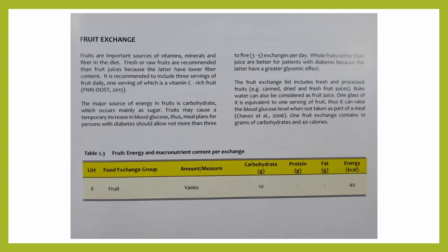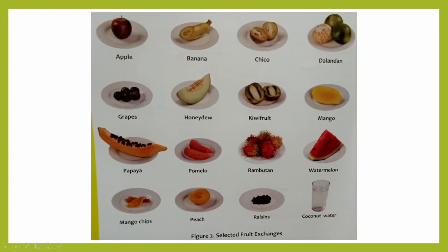For the fruit exchanges, it includes fresh and processed fruits like canned, dried, or fresh fruit juices. Coconut water is also considered as a fruit juice, as you can see here. These are the examples of the selected fruit exchanges.